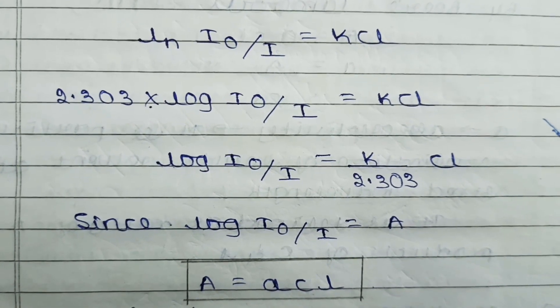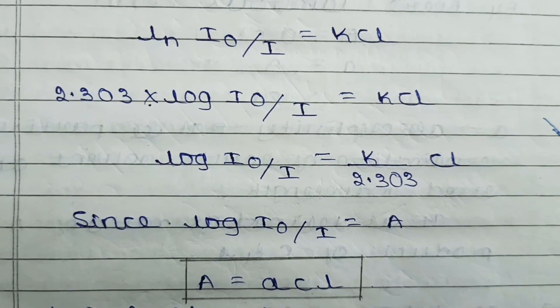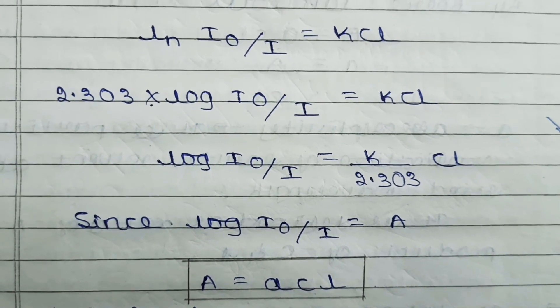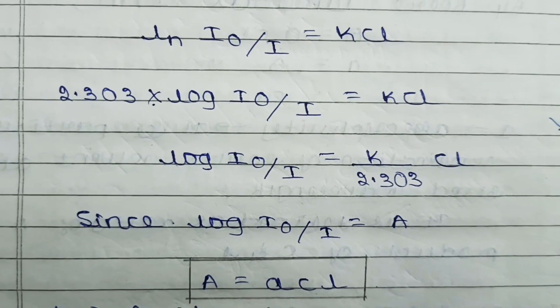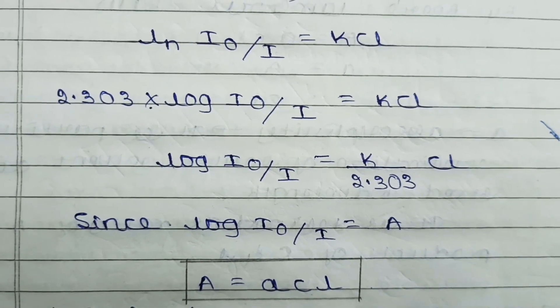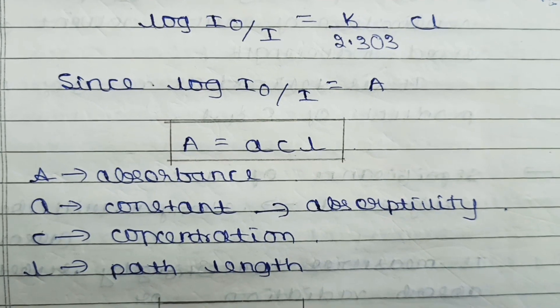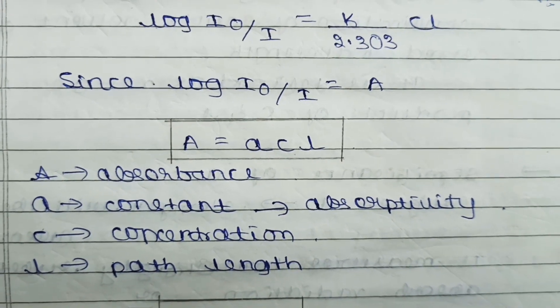Since we know log I₀/I equals A—we are taking this as a constant. A means log I₀/I. Then the equation becomes A equals K divided by 2.303, which is taken as small a, times CL.